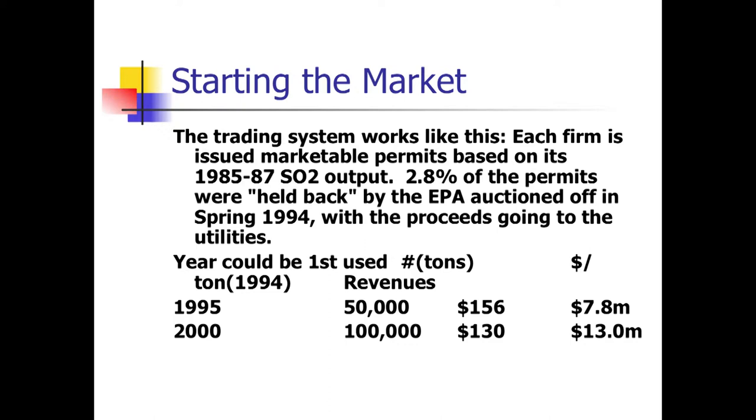Firms will say: we're getting this stuff for free, now you want to make us pay for it — we're opposed. All these firms have political power. So what they do is say, we're okay with the permit trading program, but you've got to give us the permits.